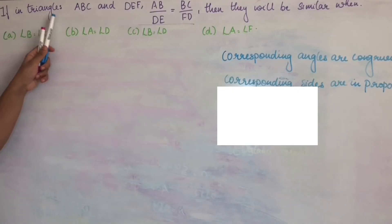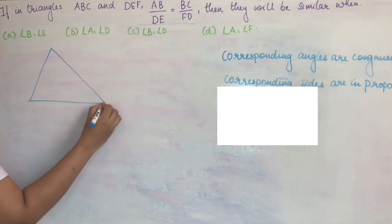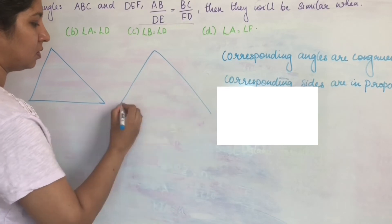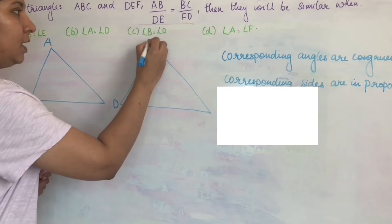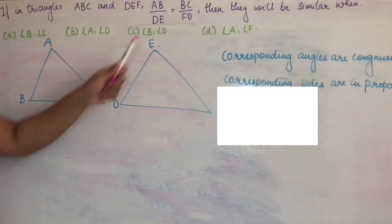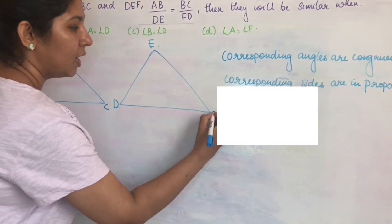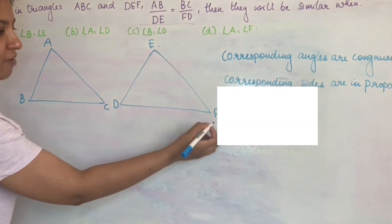If triangles ABC and DEF, two triangles are considered. Now we have side AB and DE are proportional given. That is, side AB corresponding side DE. Side AB is proportional to ED or DE. Next is BC by FD. BC, FD. Side BC is proportional to side DF or FD.